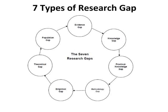There are seven types of research gap. Number one is evidence gap. Number two is knowledge gap. Number three is practical knowledge gap. Number four is methodology gap. Number five is empirical gap. Number six is theoretical gap. And number seven is population gap.